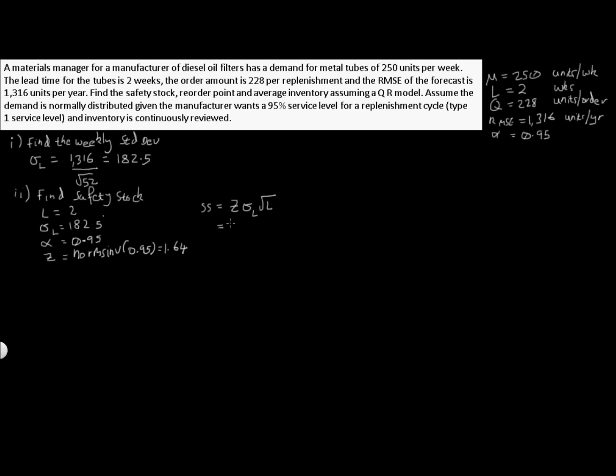Now we have the key information to find safety stock. If we recall from our theory, safety stock SS equals z times our standard deviation times the square root of L. Our z is 1.64, our sigma L is 182.5, and our lead time is 2. So calculating this out we get 423 units. So this is our safety stock.